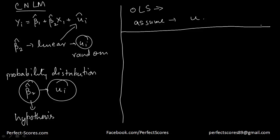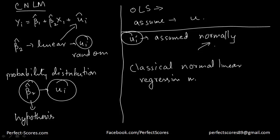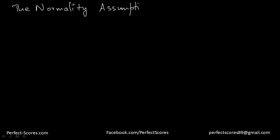What we do is we assume the probability distribution for ui to be distributed normally. We actually assume the probability distribution of the error term to be a normal distribution, and this is something which is known as the classical normal linear regression model. We're going to talk about the math in it — what are the various mean and variances of this probability distribution. So here is the normality assumption of the error term.